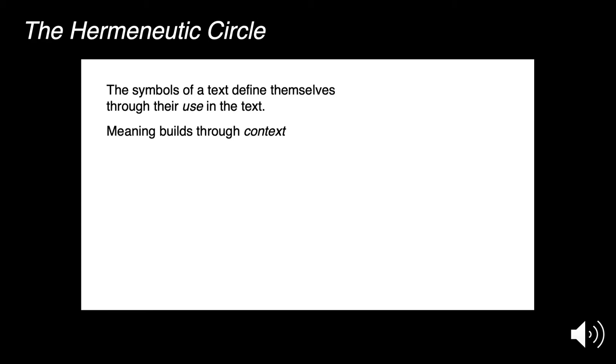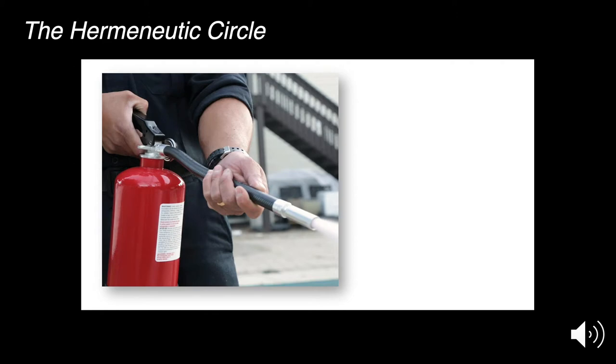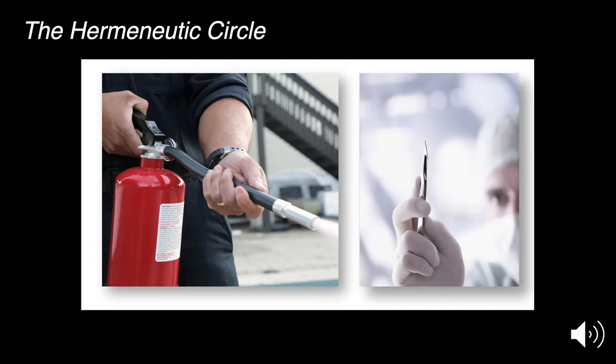This sounds pretty basic, right? We all understand this to begin with. If I say something to you like 'give me the thing,' what am I talking about? It really depends. Am I in the kitchen? Well, 'give me the thing' might mean 'give me that fire extinguisher because I'm really bad at using the stove.' But if I'm in an operating room and I say 'give me the thing,' you probably don't want to give me that same fire extinguisher. The basic premise is that symbols are defined in the context they're used in. This is especially true when we're dealing with language imbued with additional significance — something already loaded with different kinds of meanings that carries a different sort of interpretive weight inside a text.